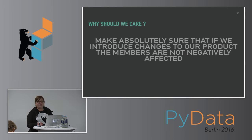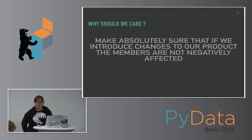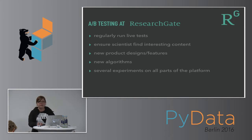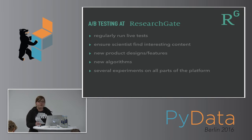Why would we actually care about AB testing at ResearchGate? We want to make absolutely sure that if we introduce changes to our product — and it's quite a diverse product — our members are not negatively affected. We also use AB testing to rapidly test new features and develop them iteratively. We regularly run live tests on all different parts of our website to ensure scientists find the right content they need. We test new product designs, new product features, conversion rates, product usage metrics, and new algorithms. At any given point in time, we run several experiments in parallel on different parts of our platform.